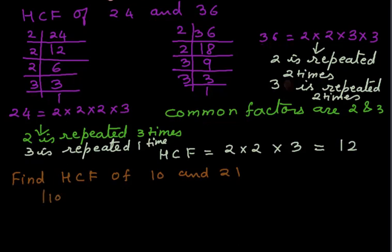First we will find the factors of 10. 10 is divisible by 2, so 2 times 5 is 10. 5 is divisible by 5. So the factors of 10 are 2 and 5.